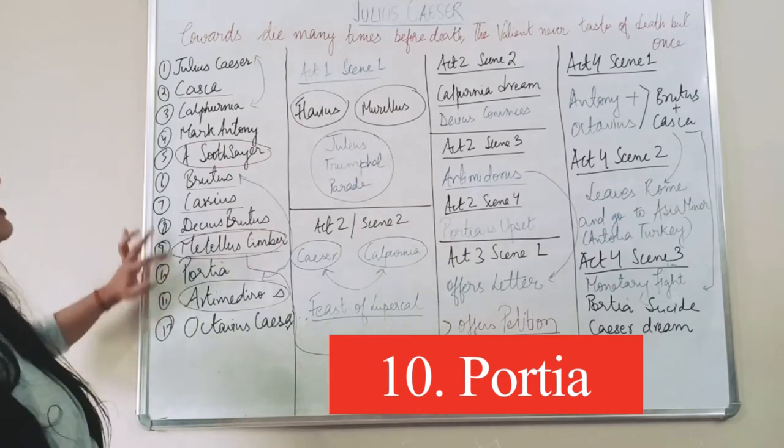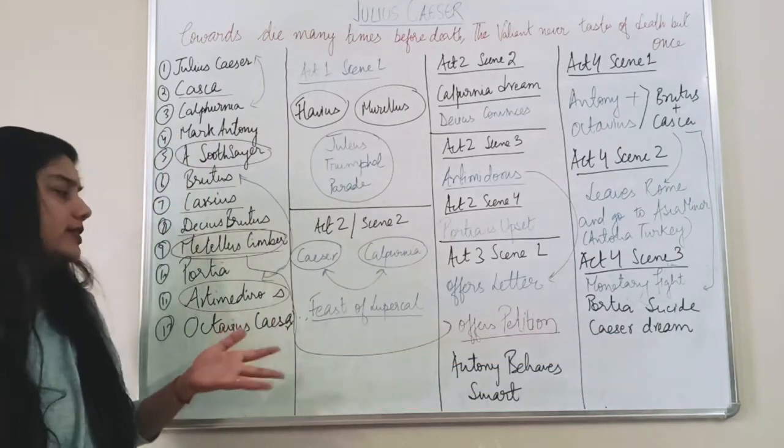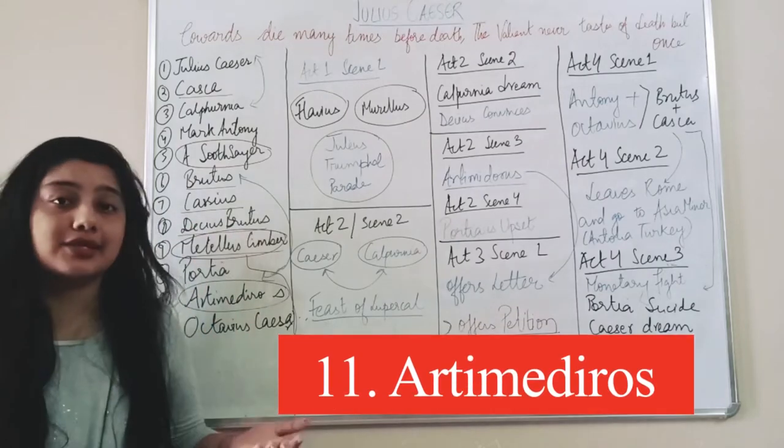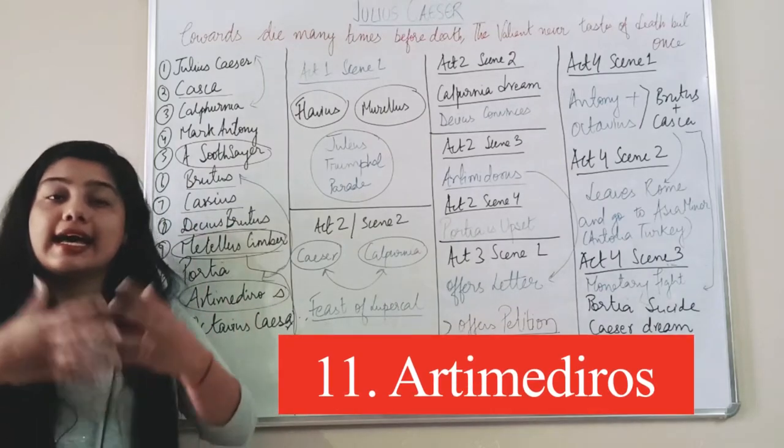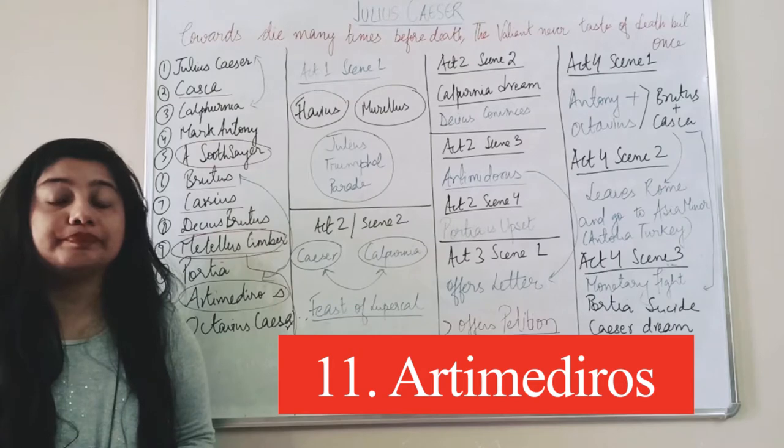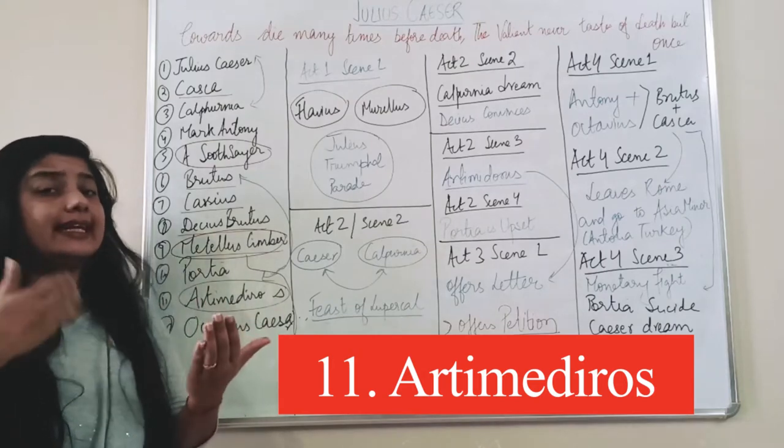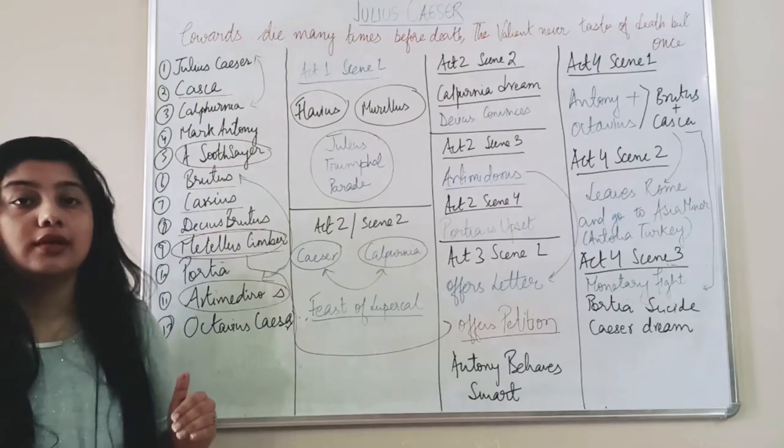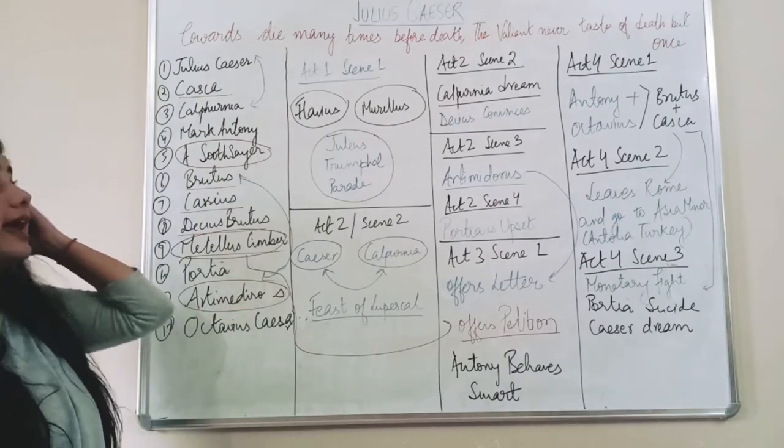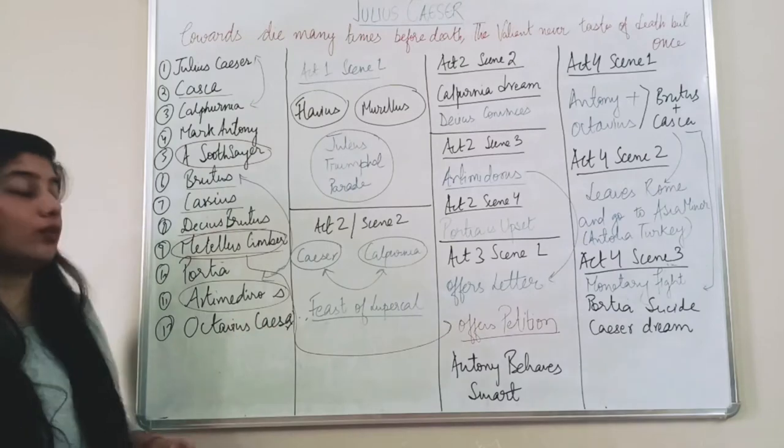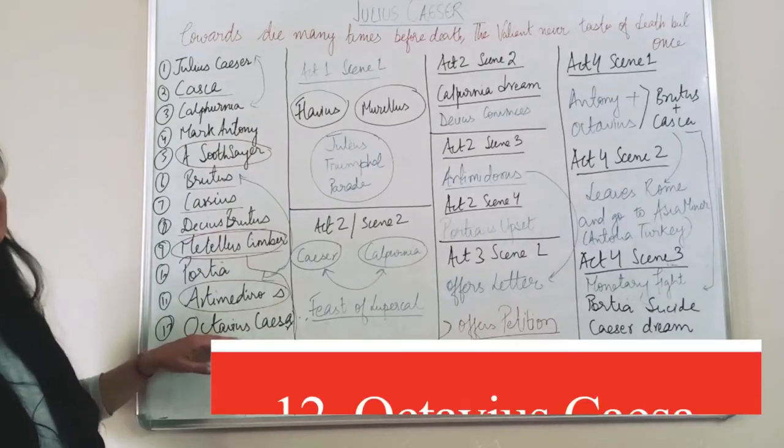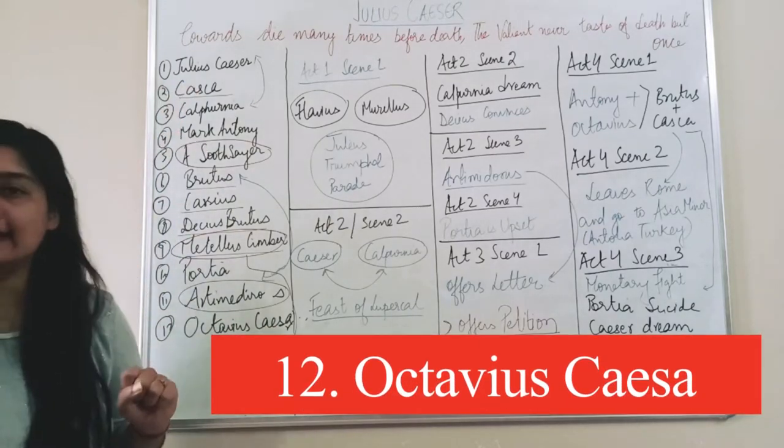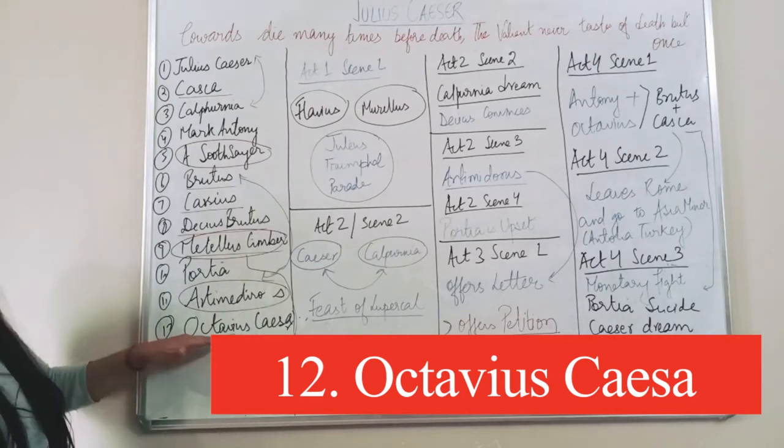Artemidorus is similar to a soothsayer. There was a person who was standing near the senate, senate where the elections and the assembly takes place. So even he was reading a letter and he was trying to inform Julius that his life is in danger. He wrote a letter but Julius, again because he was so confident about himself, he said no.